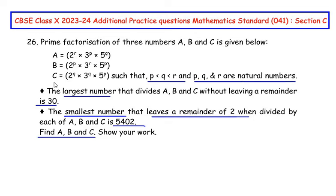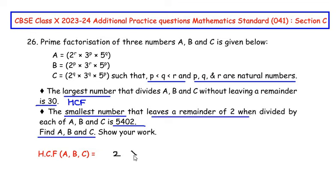The largest number that divides a, b and c without leaving a remainder is 30 — that means they are talking about the HCF. So let me write HCF here. Now in a, b and c, all three numbers have prime factors 2, 3 and 5, so let us write 2 times 3 times 5. Now we need to determine the powers of 2, 3 and 5 in terms of p, q and r.